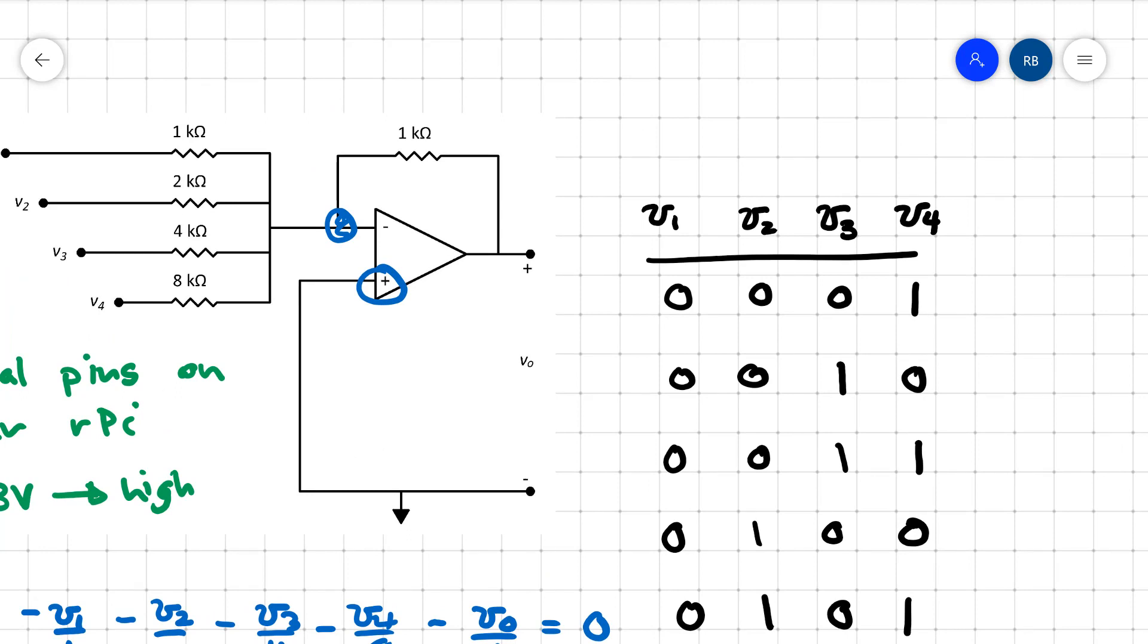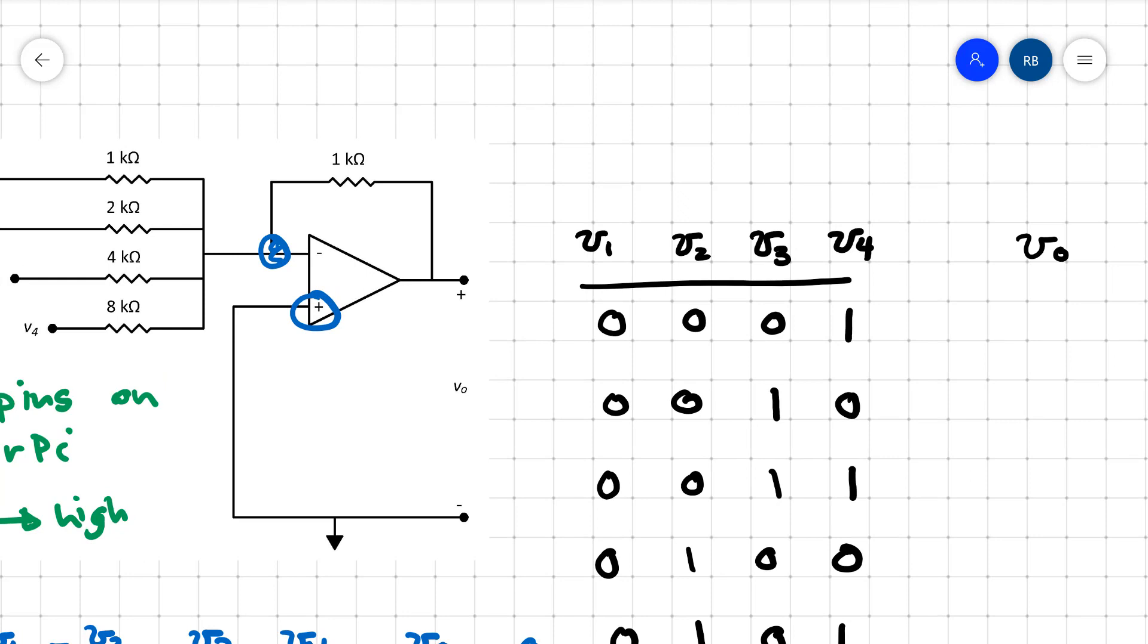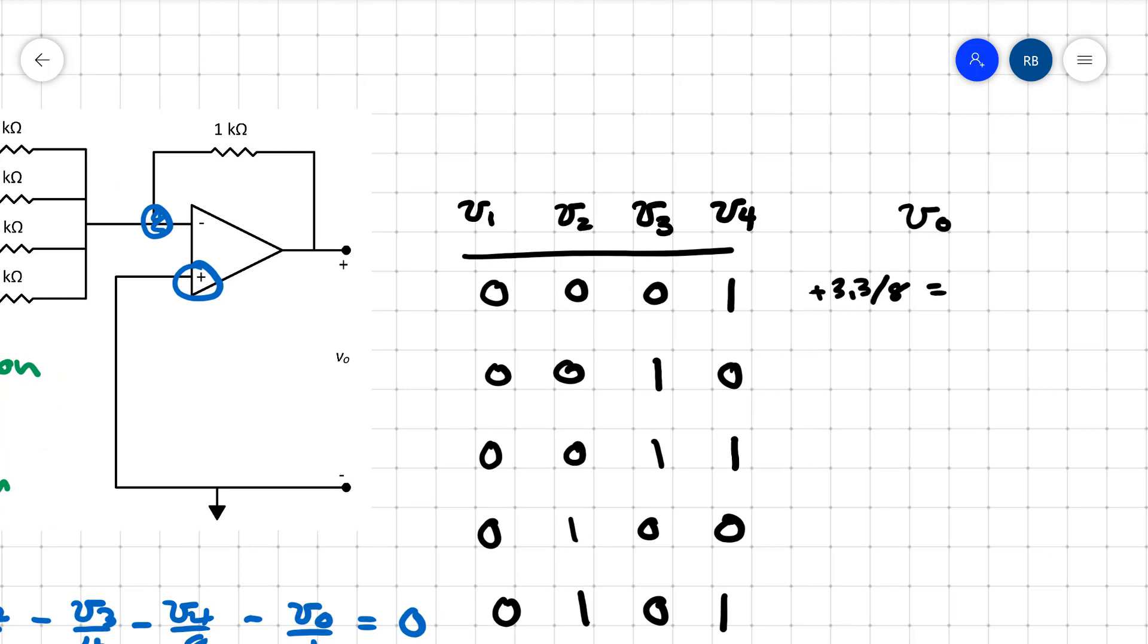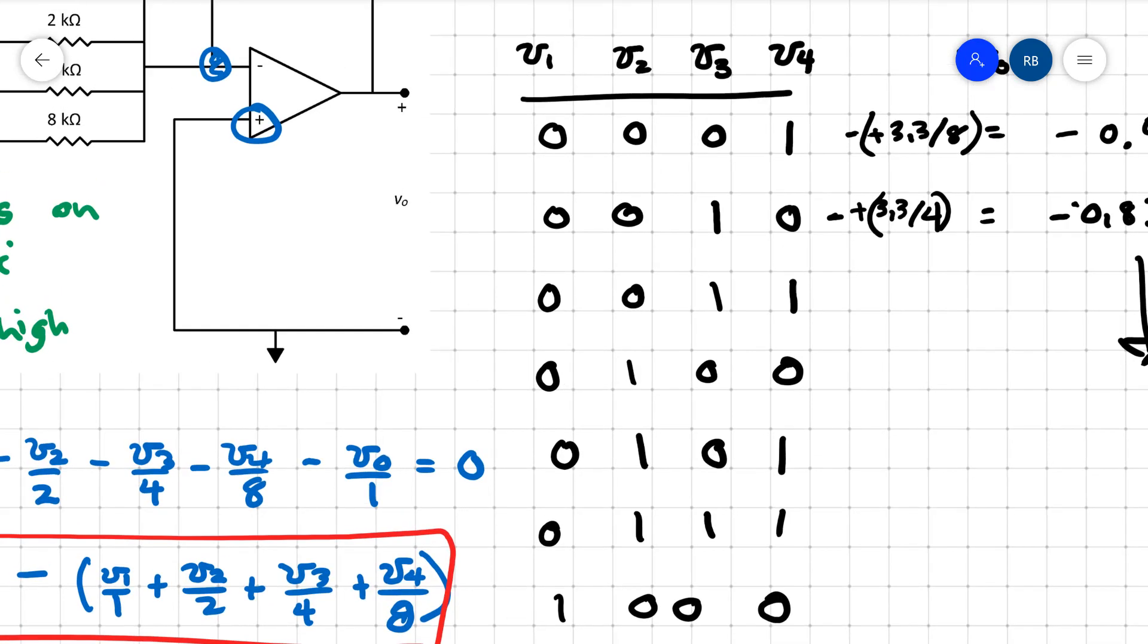When V4 is turned on, the pin that's connected to V4 is on, V4 equals 3.3 volts. I get for V out, I get plus 3.3 divided by 8 equal to negative 0.41 volts. In the second case, I'll get plus 3.3 over 4, negative, and that's going to be equal to negative 0.83 volts, and I can fill all the way down.